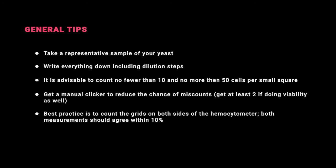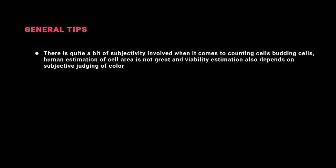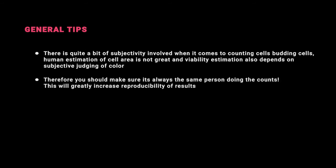Best practice is to count the grid on both sides of the hemocytometer. Both measurements should agree within 10%. There is quite a bit of subjectivity involved when it comes to counting cells. Human estimation of cell area is not great and viability estimation also depends on a subjective judgment of color. Therefore you should make sure it's always the same person doing the counts. This will greatly increase the reproducibility of the results.